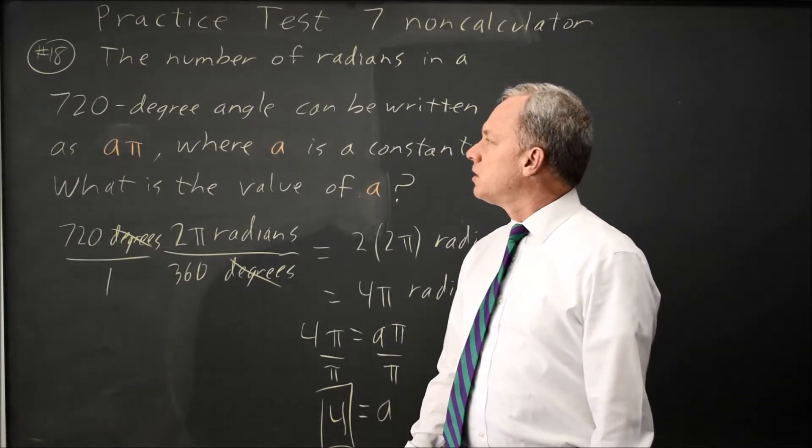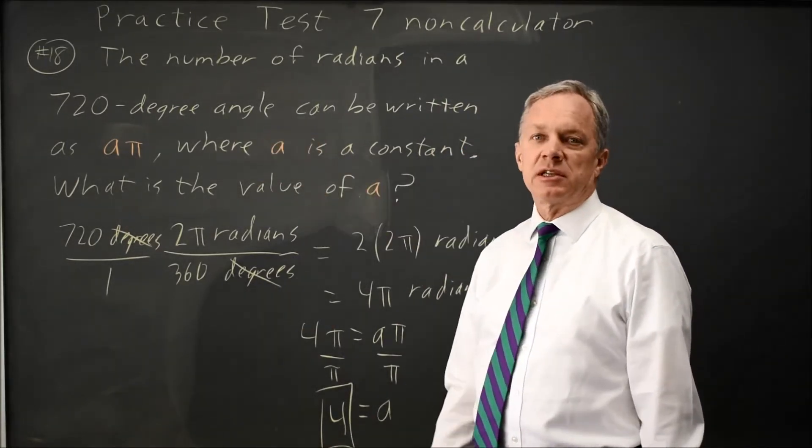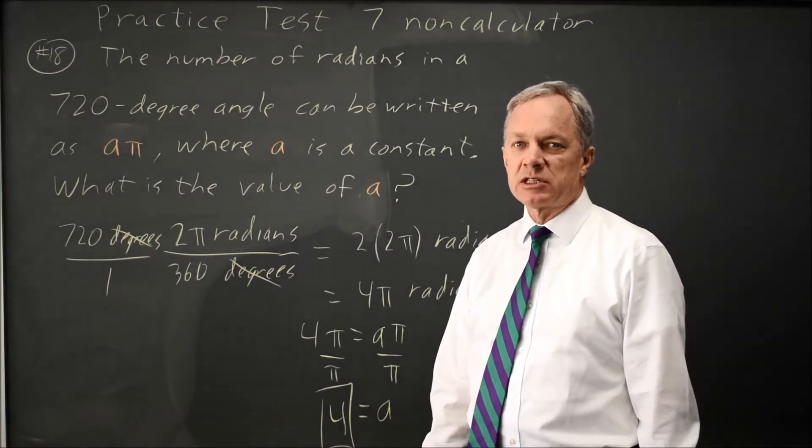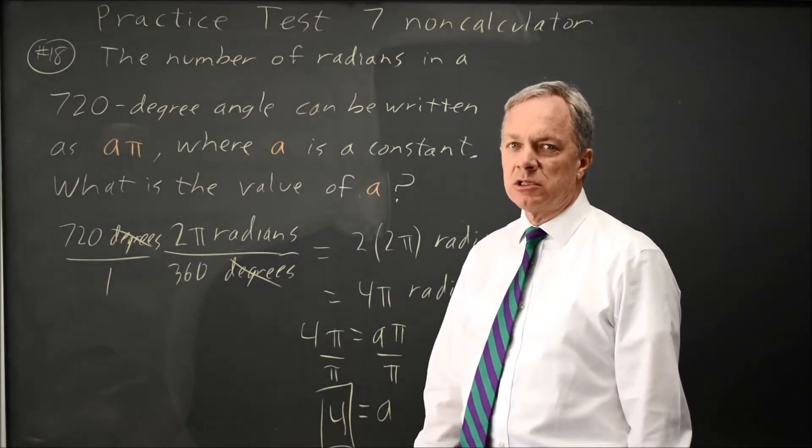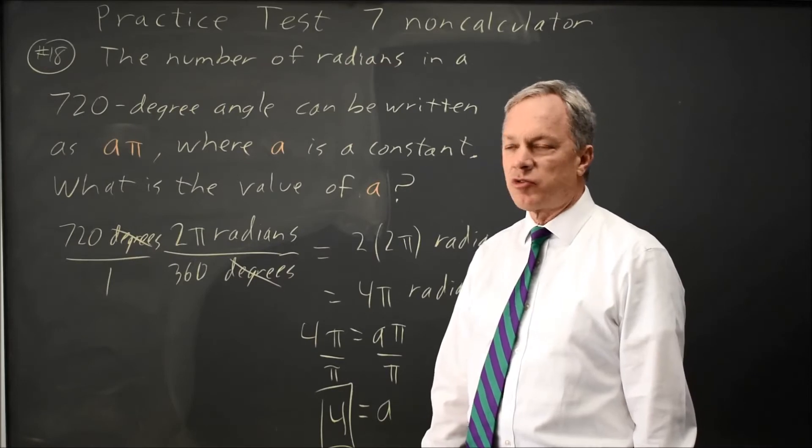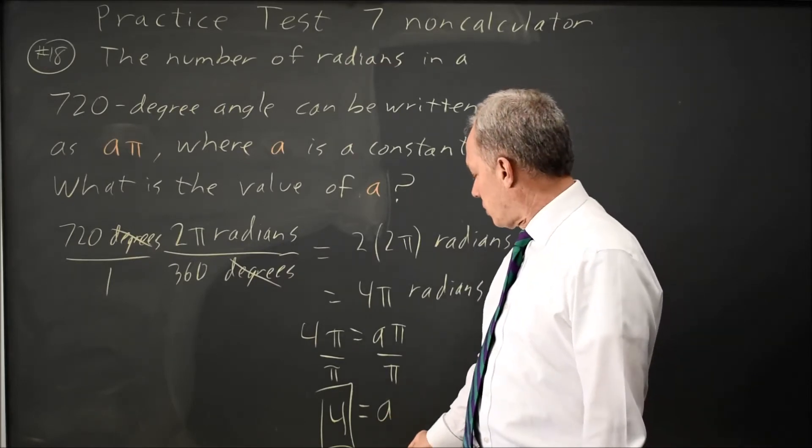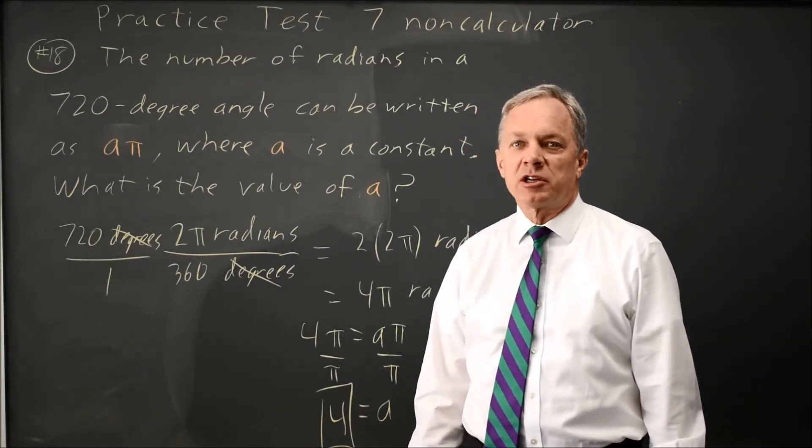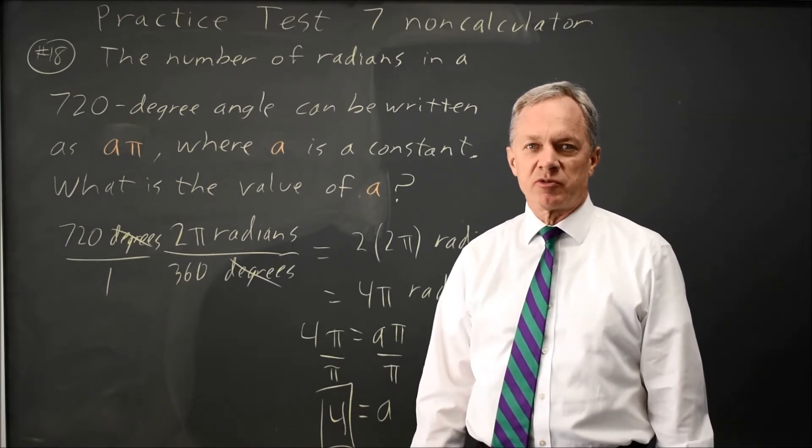Similarly, since we know that 720 degrees is 2 360-degree circles, that's the same as 2 times 2 pi radians circles, which is 4 pi, so A equals 4. We get the same answer either from geometry or from converting units.